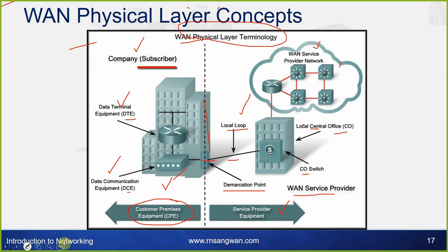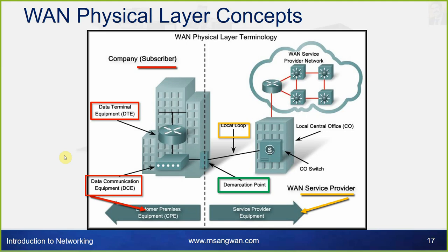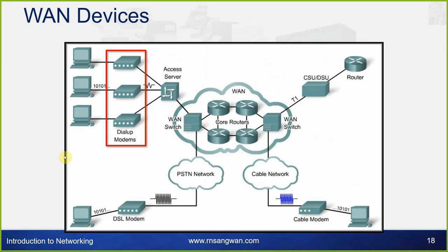The subscriber connects to the WAN service provider. Key components include customer premise equipment, service provider equipment, demarcation point, data terminal equipment (DTE), data communication equipment (DCE), local loop, and local central office (CO) switch.